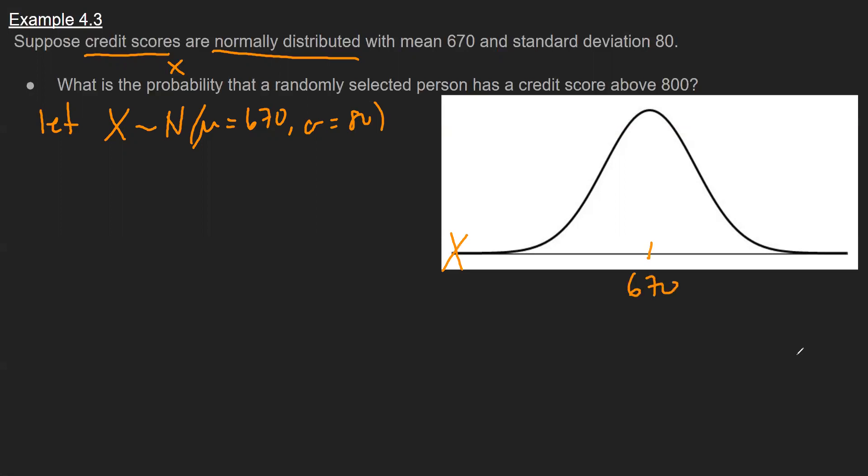So now jumping into the question, it asks what's the probability that a randomly selected person has a credit score above 800? In other words, what fraction of my distribution is at this point here, 800 or higher? So again, we saw areas underneath your distributions were how we calculated probabilities. So I need to find the probability my credit score is over 800.